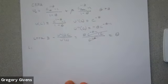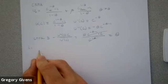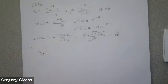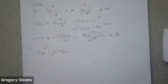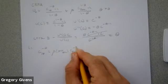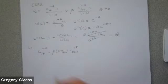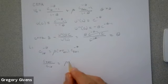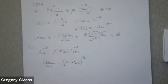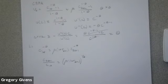Let's see what this class of utility functions implies about the consumption Euler equation — the key equation in this model. The marginal utility of first-period consumption, C_1^(-theta), equals the discounted value of one plus R_{T+1} times the marginal utility of second-period consumption, C_{2,T+1}^(-theta). Solving for the consumption ratio C_{2,T+1} over C_{1,T} gives: beta times (1 plus R_{T+1}) all raised to the (1/theta).